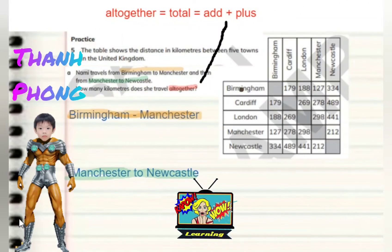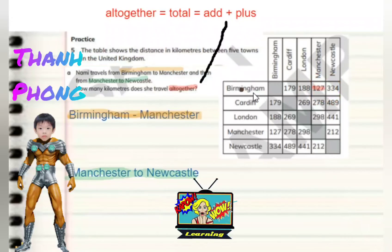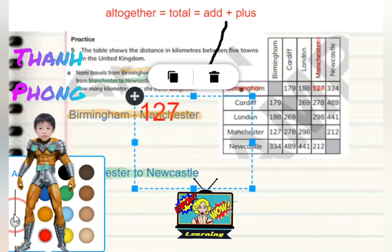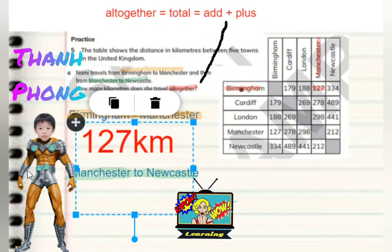So let's find out: how far is it from Birmingham to Manchester? 127 kilometres. Yeah, so we've got Birmingham and Manchester — well done. So 127, let's put that in there. That's in kilometres, it's in red.